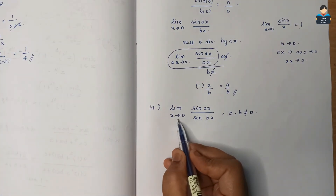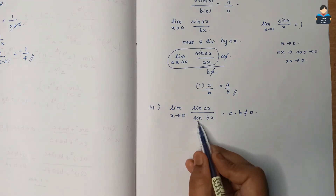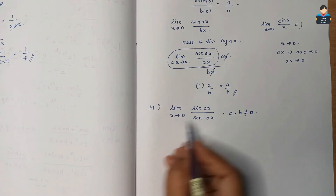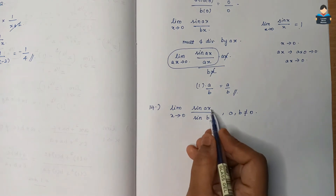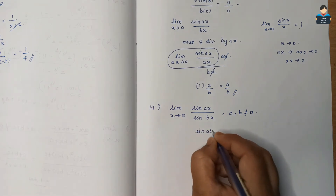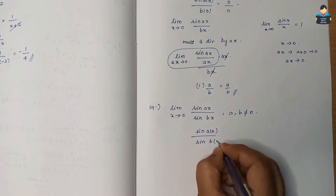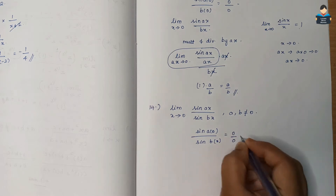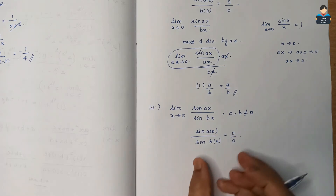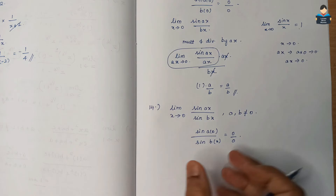Now Question 14: limit x tends to 0 of sin(ax) by sin(bx). When we substitute x = 0, we get sin(a×0) by sin(b×0), which is 0/0 form. So again we need to simplify.